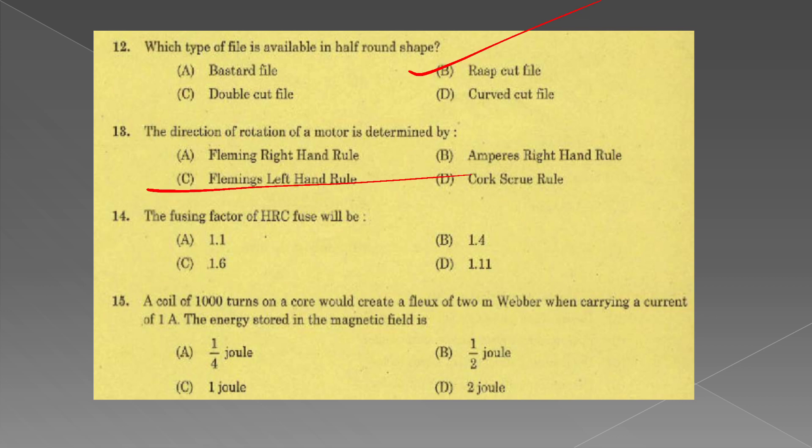The direction of rotation of motor is determined by Fleming's left hand rule. The fusing factor of HRC fuse is 1.1. A coil of 1000 turns on a core creates flux of 2 milliweber when carrying current of 1 ampere. Energy stored in magnetic field: half L I squared. This is the value of 1 joule.